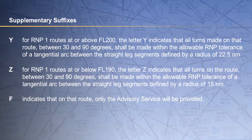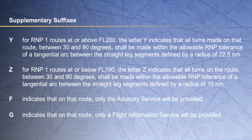The letter F indicates that on that route or portion thereof only an advisory service will be provided. The letter G indicates that on the route or portion thereof only a flight information service will be provided.